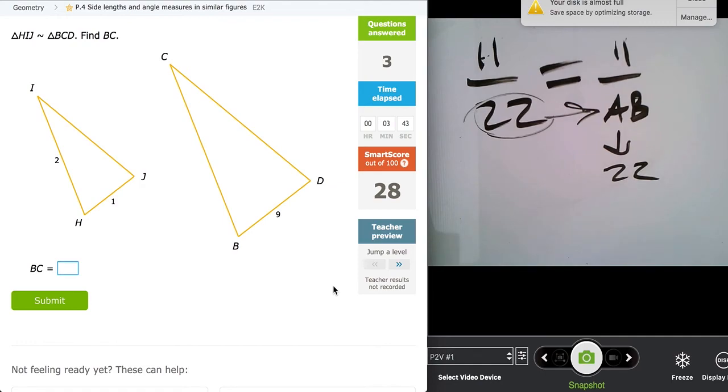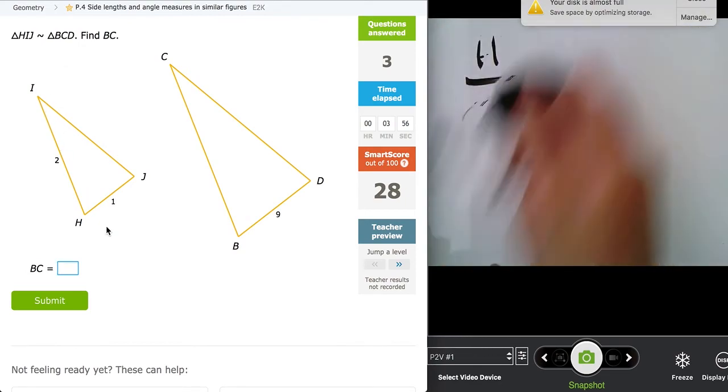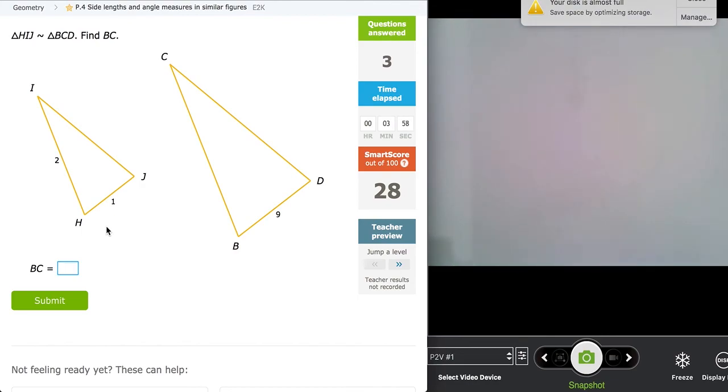Okay. Now, this one will require a little bit of math. So let's take a look at these two triangles. We have triangle HIJ is similar to triangle BCD. This is BC here.